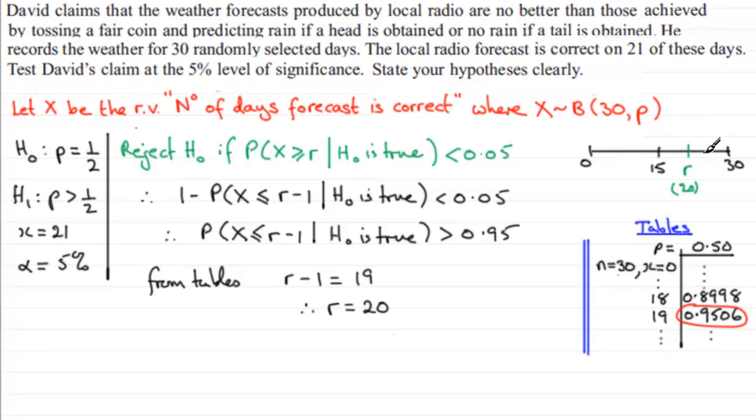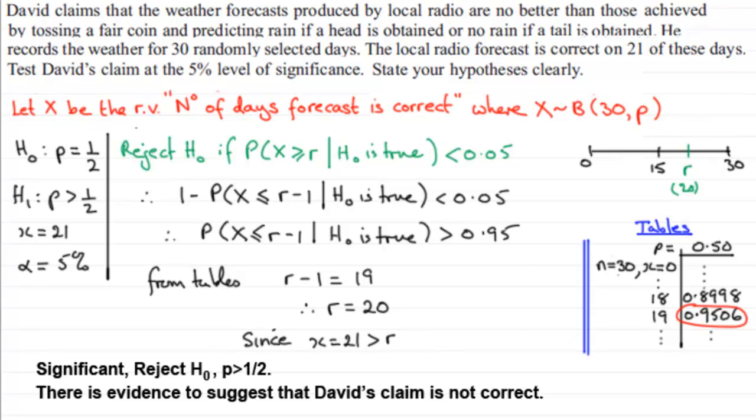In summary, since the observed value x equals 21 is greater than the critical value R, then what we've got is a significant result. Significant: we reject the null hypothesis. P is greater than half, so we can say that there is evidence to suggest that David's claim is not correct.